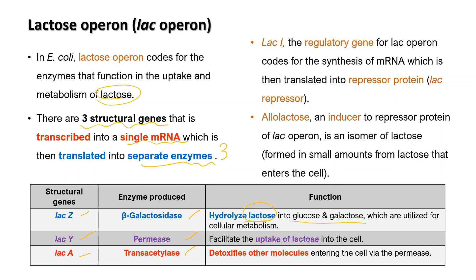There is also the regulatory gene, lacI. LacI codes for the synthesis of mRNA which is then translated into a repressor protein. Allolactose, which is an isomer of lactose, is an inducer of the repressor protein.